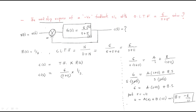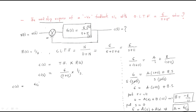Next, putting s = 0 into the equation gives A = 6/11. Substituting these values, C(s) = (6/11)/s − (6/11)/(s+11).